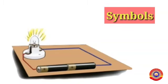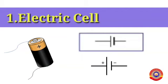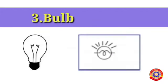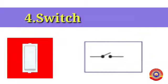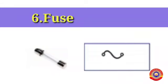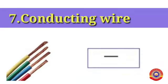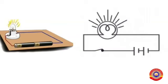Let's see the symbols of some electric components used in an electric circuit. Students, observe how to draw the symbol of each component. The first ones are: electric cell, battery, bulb — when the bulb is glowing the symbol is like this — switch in on mode, switch in off mode, buzzer, fuse, and the last one, conducting wire.